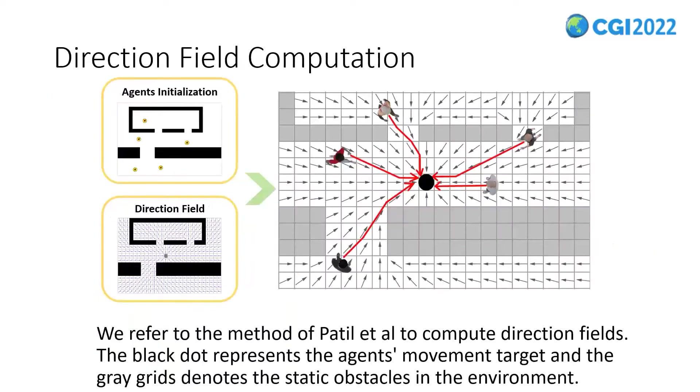We compute the direction field for each group of agents based on the static description of the environment and specified goal positions. The computation of the direction field requires a discretization of free space in the environment. We use regular grids like this figure, in which each cell of the grid stores a vector representing the ideal moving direction.